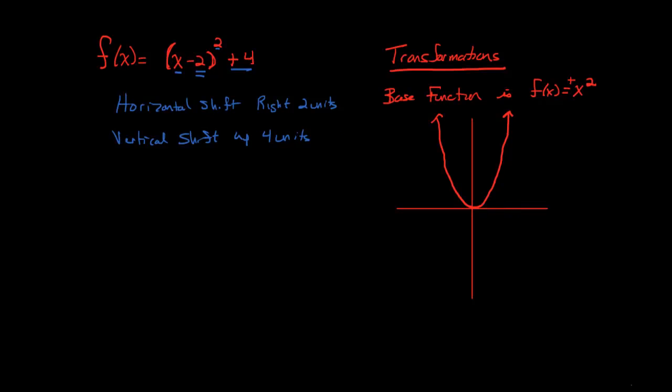So, based off of this, we know that we're going to shift two spaces to the right, and then we're going to go up one, two, three, four units. So we no longer are going to have a vertex or a value that exists at zero, zero. We're going to have a new vertex that will exist at two comma four.